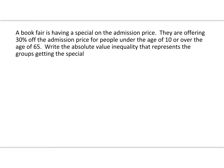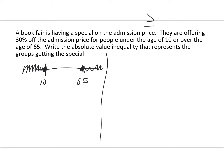All right, let's move on. The book is having a special on admission pricing, offering 30% off admission for people under the age of 10 or over the age of 65. Here's where we have to be careful — only the people less than 10 or over 65 get the discount. This is a typical 'or' graph, so instead of less than, our symbol on the absolute value is going to be greater than or equal to. The process is still the same. For the mean: 65 plus 10 divided by 2 equals 75 divided by 2, which is 37.5.